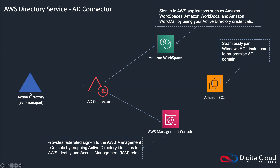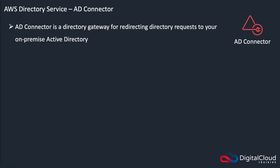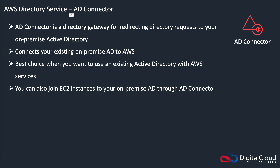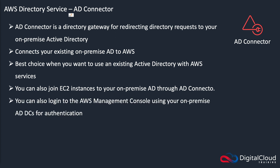That means your user accounts are mapped to an IAM role, and that role allows them to access AWS services. You would connect this over a VPN or Direct Connect if your Active Directory is on-premises. So this is a directory gateway for redirecting directory requests to your on-premises AD — it connects your existing on-premises AD to AWS. It's the best choice when you want to use an existing AD. You can also join EC2 instances to your on-premises AD through AD Connector, and you can log in to the Management Console using your on-premises AD domain controllers for authentication — meaning a user account in your on-premises Active Directory can be used to log into the AWS Management Console.